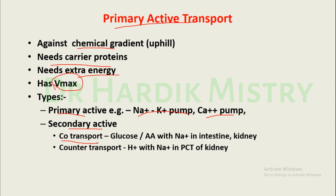In secondary active transport, there are two types: co-transport and counter transport. Co-transport means substance movement occurs in a single direction — both substances move in the same direction. Counter transport means substance movement occurs in the opposite direction. Glucose and amino acid transport with sodium ions in the intestine or kidney is an example of secondary active co-transport. Hydrogen ion exchange with sodium ions in the proximal convoluted tubule of the kidney is an example of secondary active counter transport.